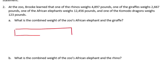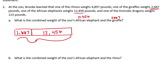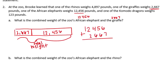I'm going to draw a tape diagram to help figure out the combined weight of the African elephant and the giraffe. The giraffe weighs 2,667 pounds and the elephant weighs 12,456 pounds. Those together will be the total weight. Now let's add them together: 12,456 plus 2,667. It's really important to line up the place values so ones align with ones, tens with tens, and hundreds with hundreds.